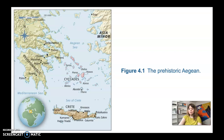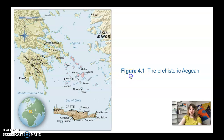Each of these art periods in each of the three areas has basically an early, middle, and late period. The late art from the Greek mainland is called Mycenaean, so Mycenaean is just part of Helladic art. It's a little bit later in the timeline, but the Mycenaeans are actually just a part of the larger picture of Helladic art from the mainland.